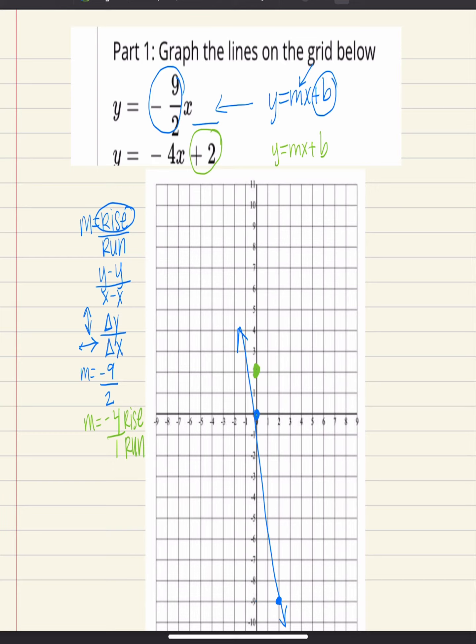So from the 2 that we have already graphed, we're going to go down 1, 2, 3, 4, and we're going to go to the right 1 and plot another point. And then I'll connect those two.